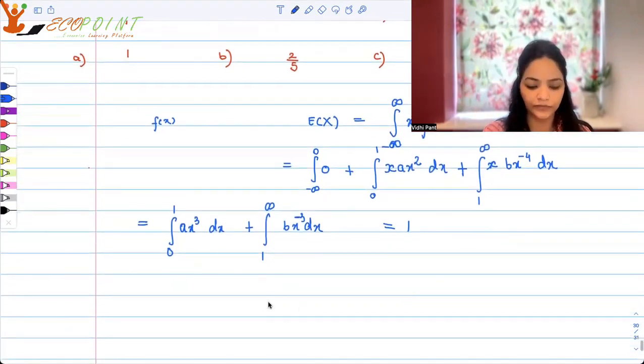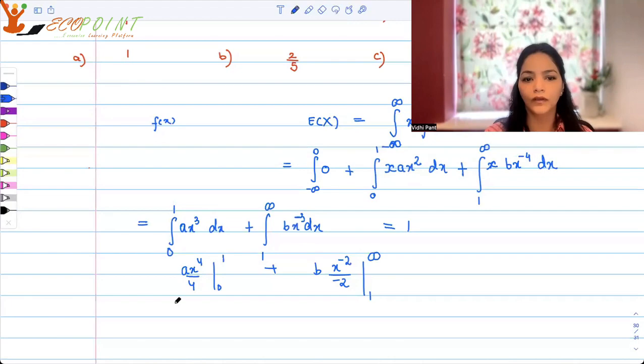So let's just integrate it. Once you integrate, you will get a x to the power 4 upon 4 with bounds 0 to 1, plus b times x to the power minus 2 upon minus 2 with bounds 1 to infinity. Now this is equal to 1. So let's put the bounds. We'll get a upon 4.